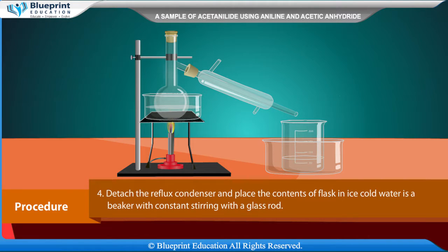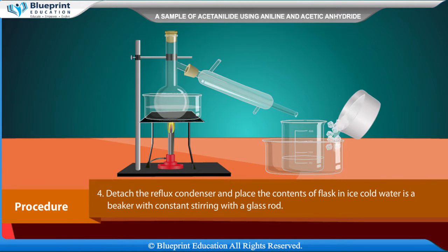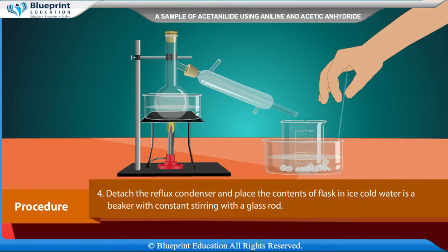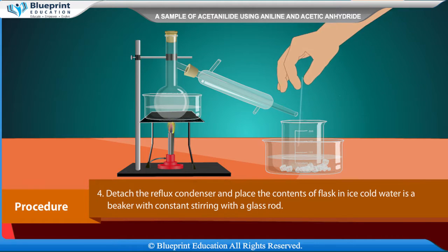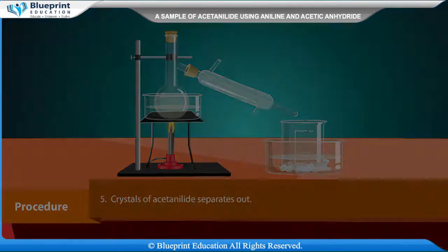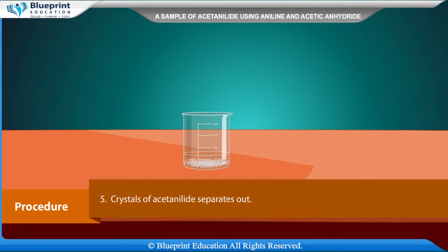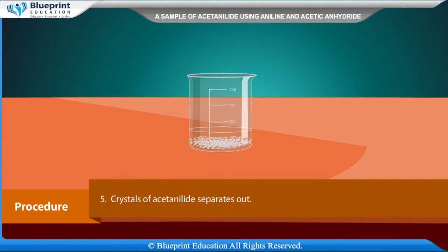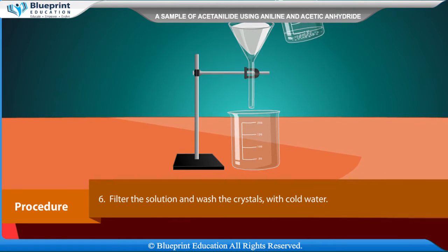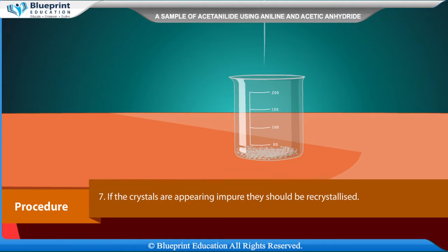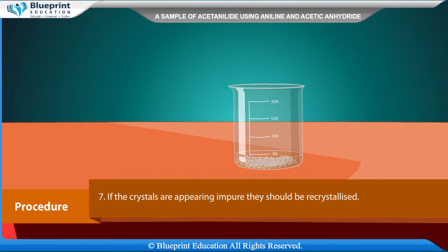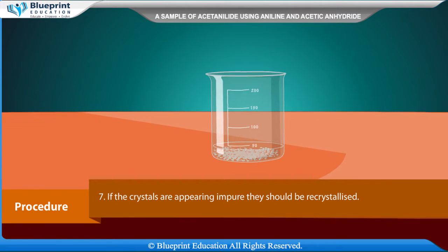Detach the reflux condenser and place the contents of the flask in ice cold water in a beaker with constant stirring with a glass rod. Crystals of acetanilide separate out. Filter the solution and wash the crystals with cold water. If the crystals appear impure, they should be recrystallized.